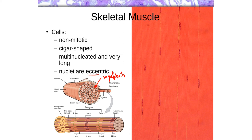Because skeletal muscle fibers form from the fusion of multiple cells, they are multinucleated. As repair happens, more satellite cells fuse to a damaged skeletal muscle fiber, adding even more nuclei. These are referred to as muscle fibers because they are really no longer individual cells — they can be one to two centimeters in length.